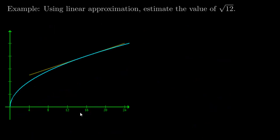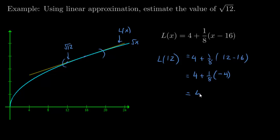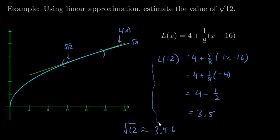Now let's say I wanted to find the value of the square root of 12. Notice that my linearization L of x approximates the square root of x pretty well in this region. So recall that my linearization is L of x equals 4 plus one-eighth times (x minus 16). Then L of 12 equals 4 plus one-eighth times (12 minus 16), which is 4 plus one-eighth times negative 4, that's 4 minus one-half, which is 3.5. And the square root of 12 in a calculator is about 3.46. So that's again not too bad, especially since I'm doing very simple algebra.